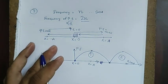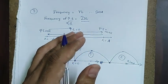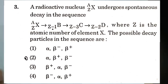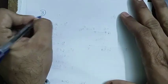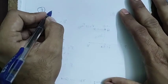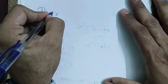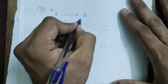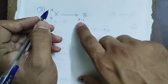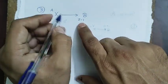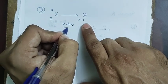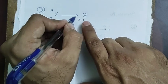Question 3 is from the radioactivity section. A radioactive nucleus X with atomic number Z and mass number A changes to nucleus B with atomic number Z−1. Since Z drops by 1, a beta-plus particle must be emitted — in beta-plus decay, a proton converts into a neutron releasing a positron.